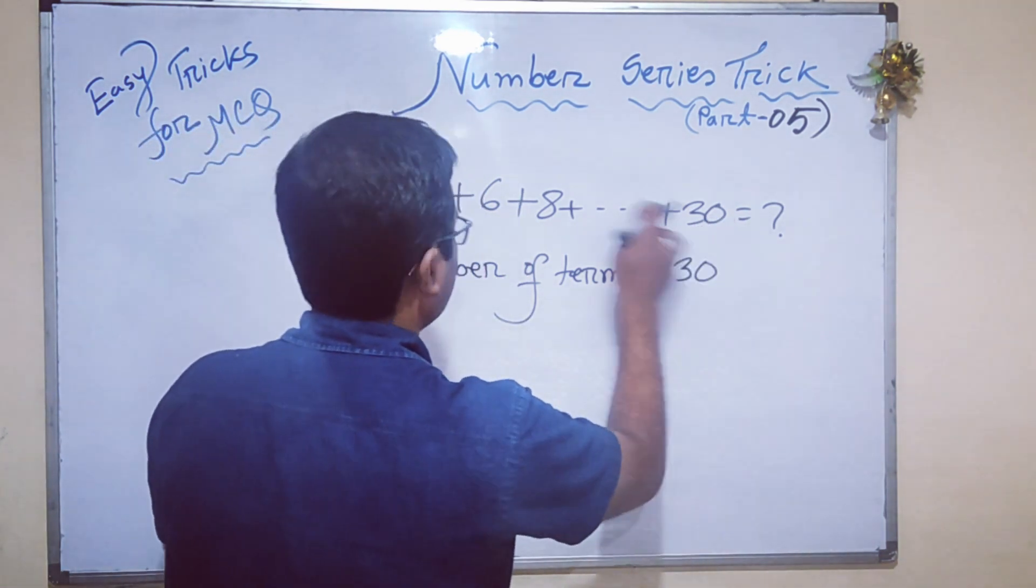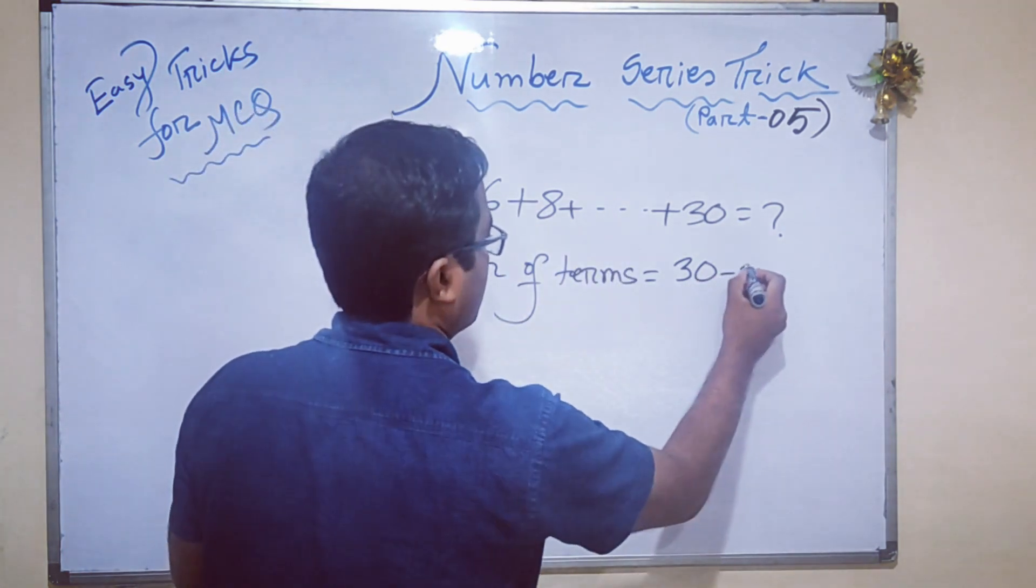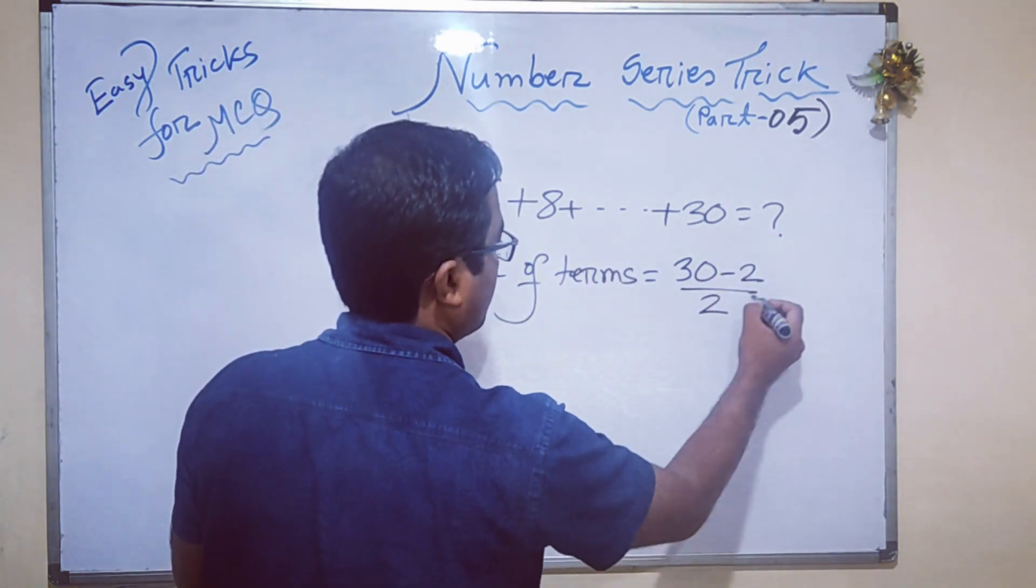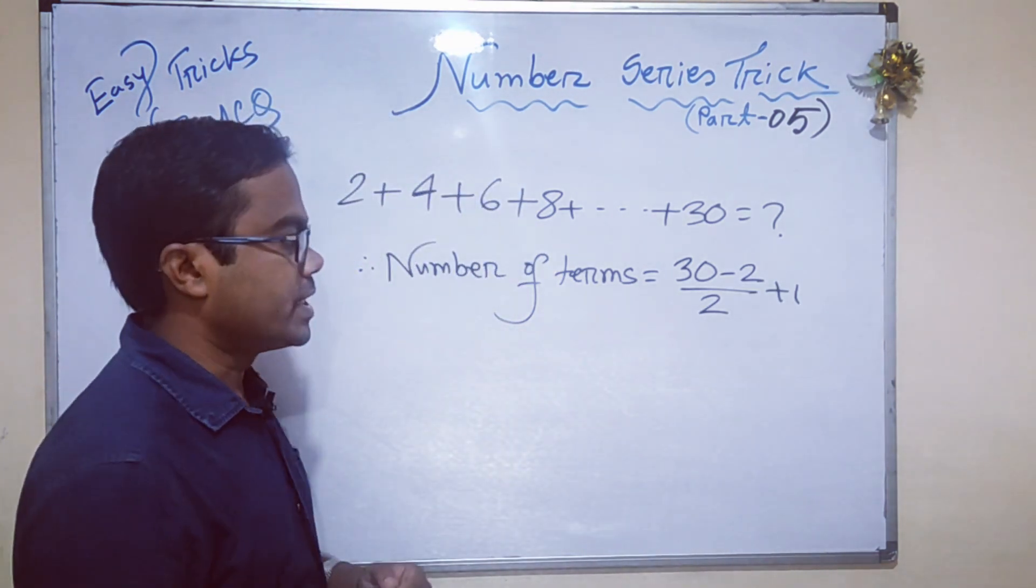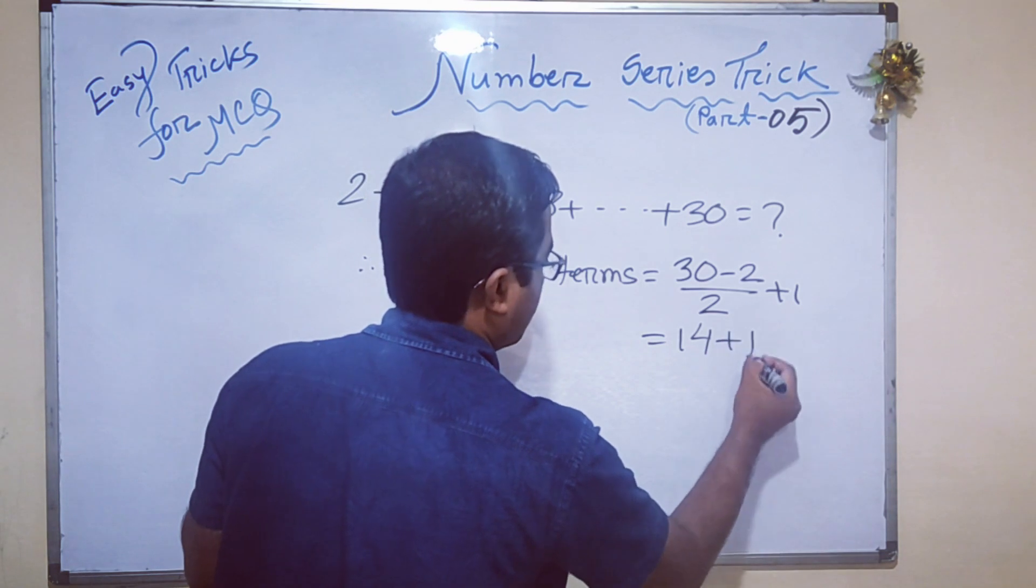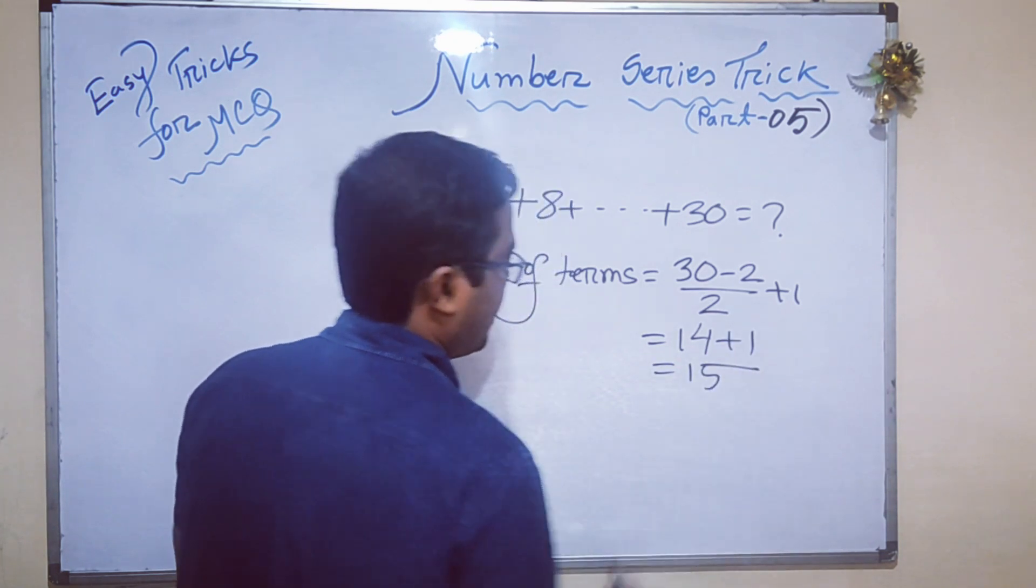So here, last term is 30 and first term is 2. 30 minus 2, divide by 2, plus 1. 30 minus 2 means 28, 28 divided by 2 = 14, plus 1, equals 15.